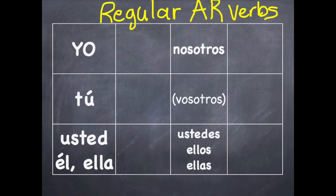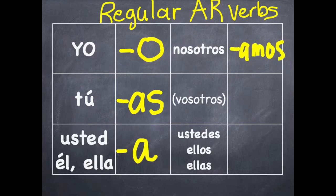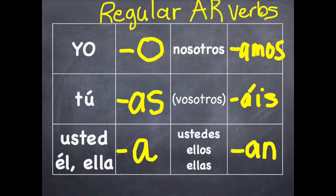Here are your regular AR verb endings. For the singular forms: yo, tú, has; usted, ella, ha. And the plural endings: for we, amos; vosotros, if you're in Spain, is -áis; ustedes, ellos, ellas, han.